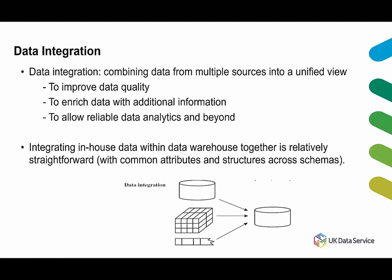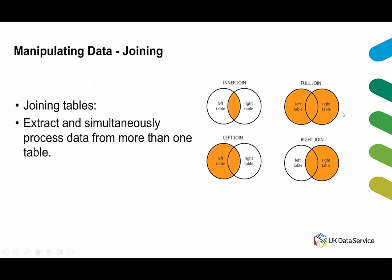Integrating in-house data within a data warehouse is relatively straightforward, with common attributes and structures across schemas. Joining tables enables you to extract and simultaneously process data from more than one table. There are four types of joins: inner join, full join, left join, and right join. Note that these methods are common across various applications and languages — SQL and Python may have different commands, but you can always select which join type you want.